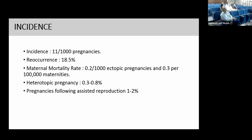The incidence of ectopic pregnancy is 11 per 1,000 pregnancies. The recurrence rate in a female who previously had ectopic pregnancy is 18.5%. Maternal mortality rate is 0.2 per 1,000 ectopic pregnancies and 0.3 per 100,000 maternities. Heterotopic pregnancy — in which pregnancy occurs simultaneously intrauterine and extrauterine — is 0.3 to 0.8%. Pregnancies following assisted reproduction that end up as ectopic pregnancies are 1 to 2%.